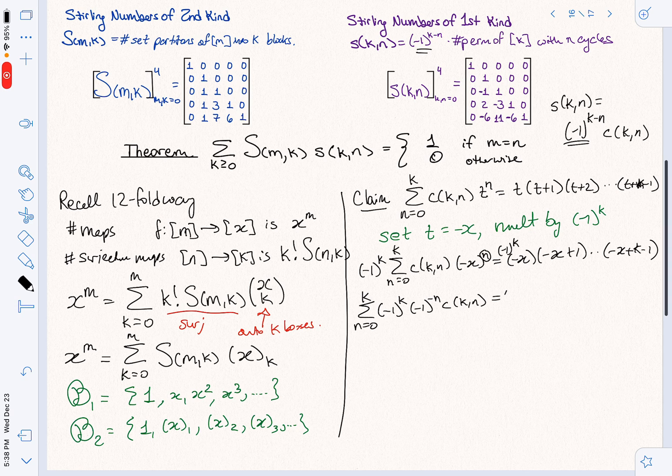And what do I get on the right-hand side? Well, I've got my minus 1 to the K. And I'm going to factor out the minus 1s from each of these terms as well. They're K terms, so I get another minus 1 to the K. And now, instead of a rising factorial, I'm going to get a falling factorial, still with the same number of terms.